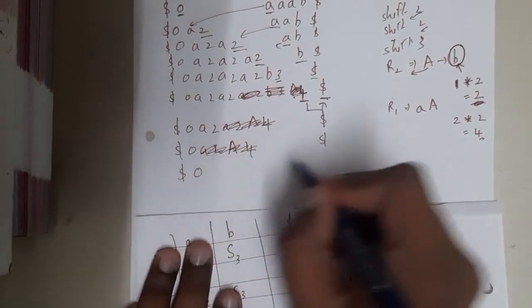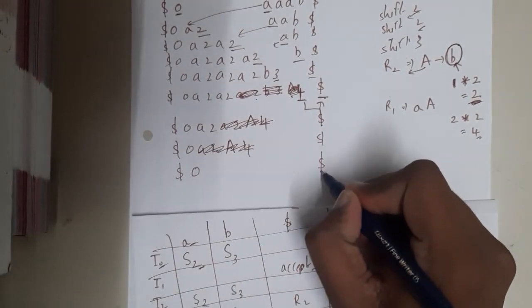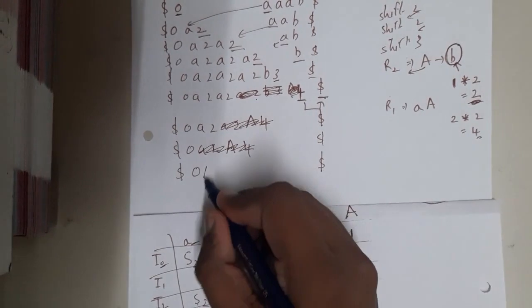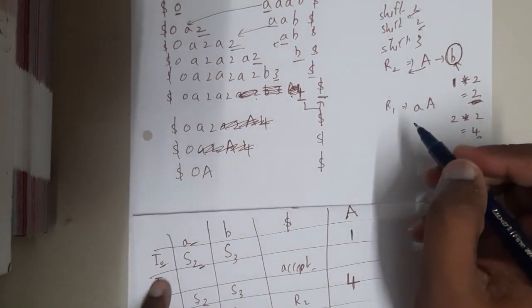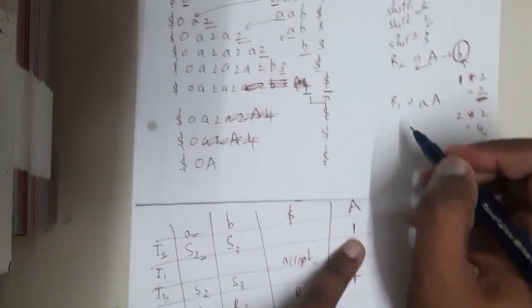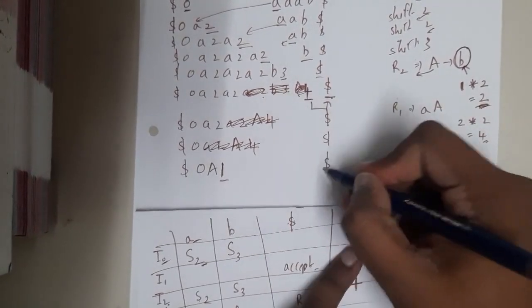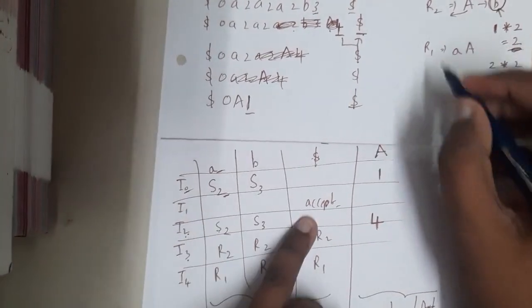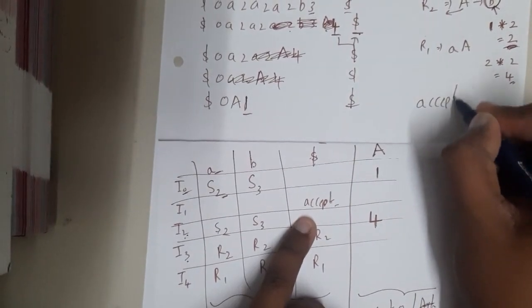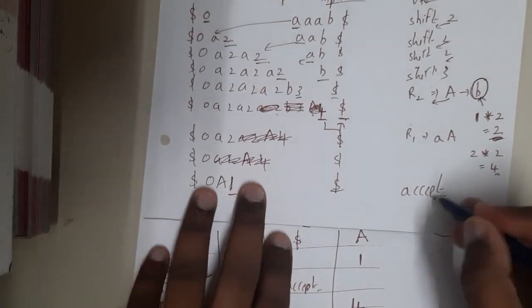Okay, so again on a - on a, 0 on a is nothing but a 1, right? So 1. So 1 on dollar - 1 on dollar is nothing but accept. So at the end we reach the accept. So hence you can say that the given string is parsed, or parsable by the LR grammar given, or by the parser which we have designed.